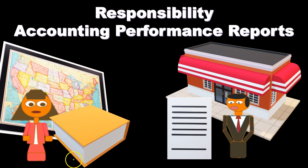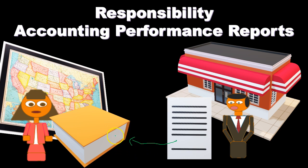At the regional manager or vice president level, reports are summarized because they don't need as much detail — they're not on the ground level controlling those costs directly. That's the job of the store manager. The store level will have a lot of detail about the costs they control, summarize those, and give them to the regional office. The regional office has less detail per store but is ultimately in charge of more controllable costs, as they oversee multiple regions.